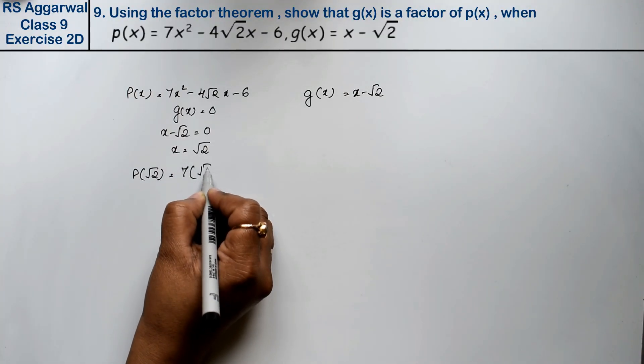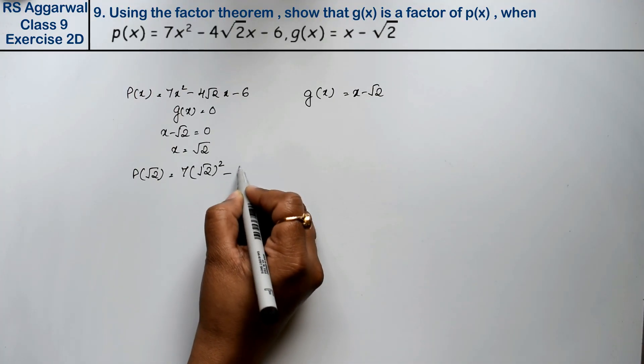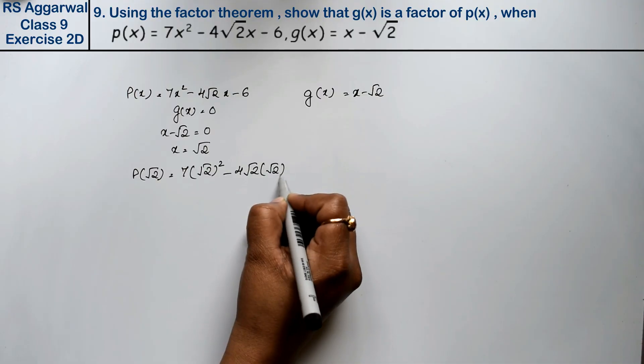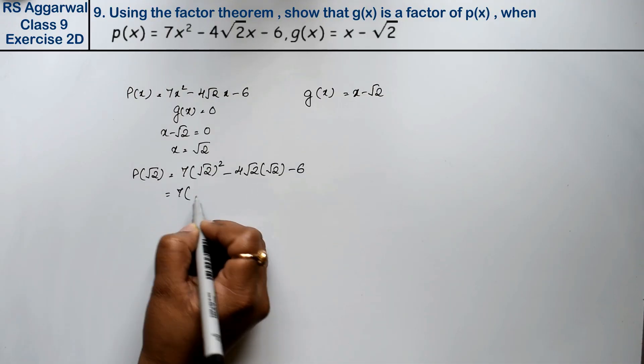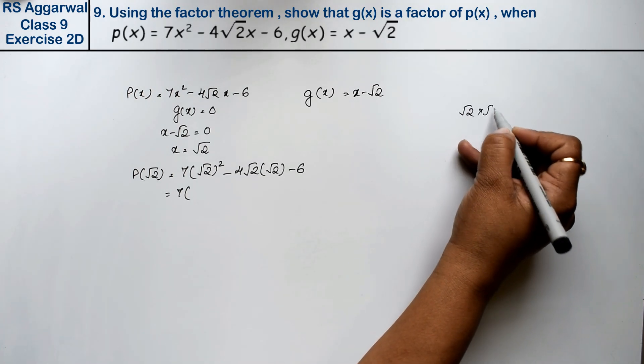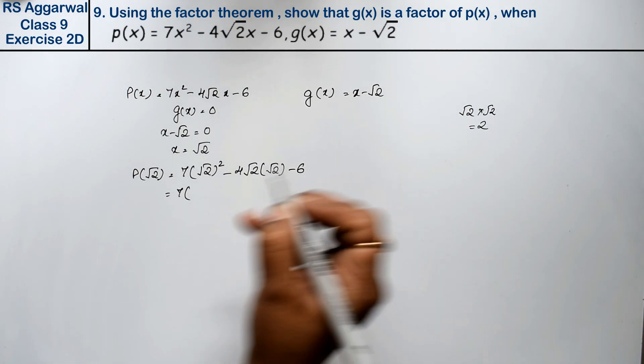This gives us 7(√2)² - 4√2 × √2 - 6. Now, √2 into √2 is 2.